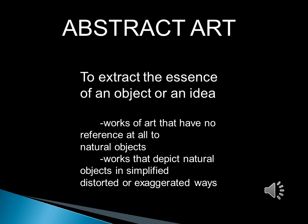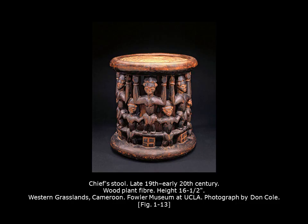The next term under art and reality is abstract art. Abstraction means to extract the essence of an object or an idea. Abstract art can be works of art that have no reference at all to natural objects, or it can be works that depict natural objects in simplified, distorted, or exaggerated ways. Much of the tribal arts from Africa and Oceania revolve around the abstraction of the human form, as seen in this chief's stool made in the late 19th to early 20th century.